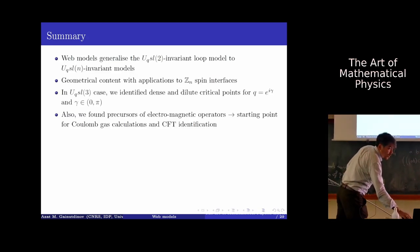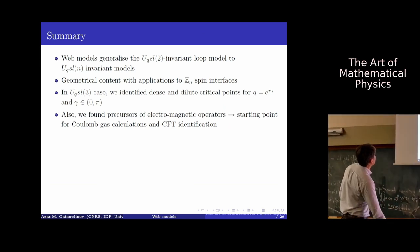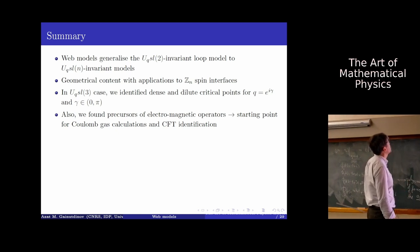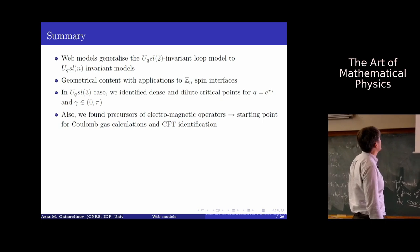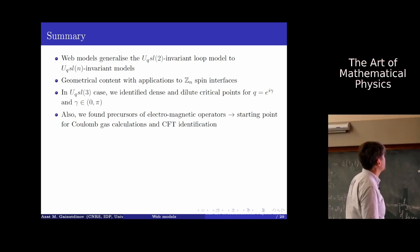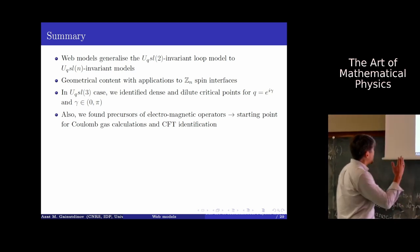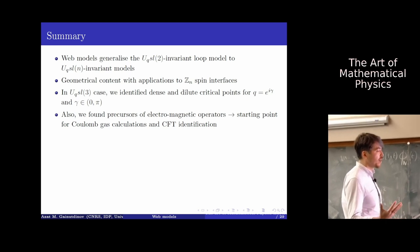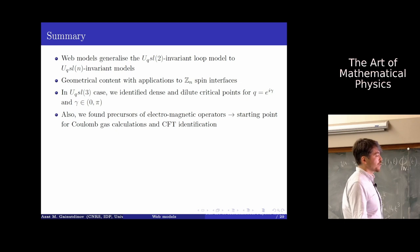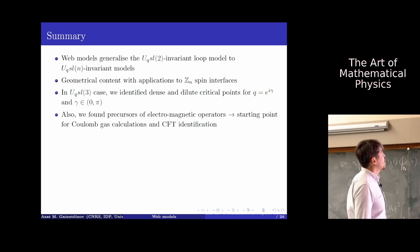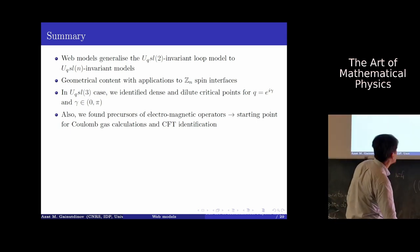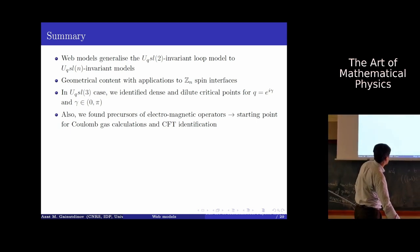To conclude: we have introduced nice generalizations of loop models to web models with geometrical content, using the diagrammatic calculus of invariant theory, with applications to Z_N spin interfaces. We have identified several critical points. The most difficult part of the work was constructing electromagnetic operators or open web configurations — the mathematical analysis was the most interesting part, but also physically important as a starting point for Coulomb gas calculations and CFT identification. This is a third paper we are working on.